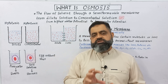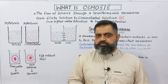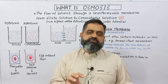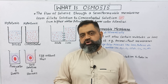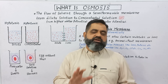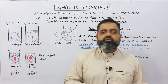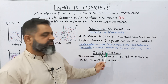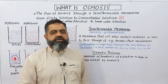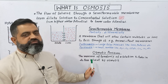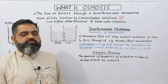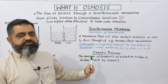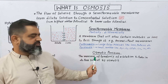While osmosis is taking place, there should be an osmotic gradient. If there is no osmotic gradient, osmosis will not take place. Another important factor is osmotic pressure, which is responsible for the movement of water molecules or solvent molecules through the plasma membrane or semi-permeable membrane.